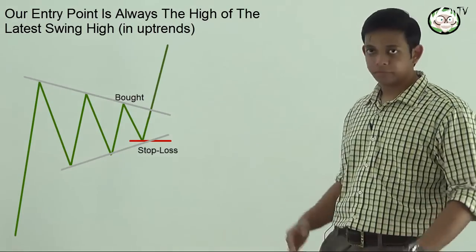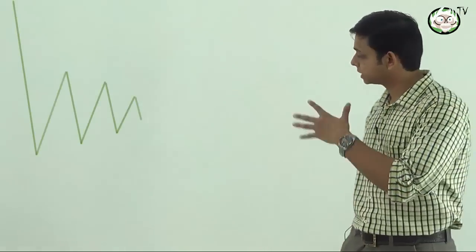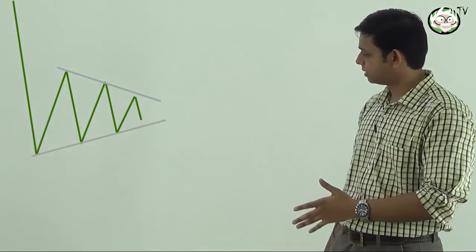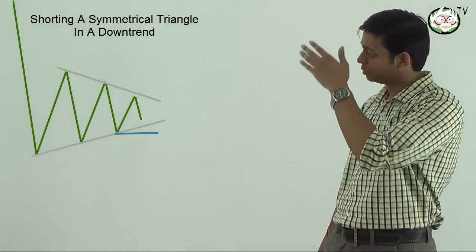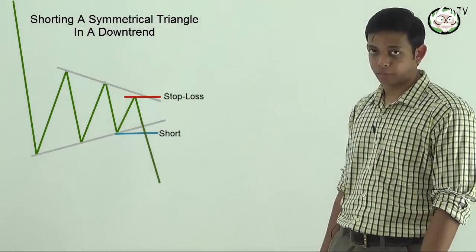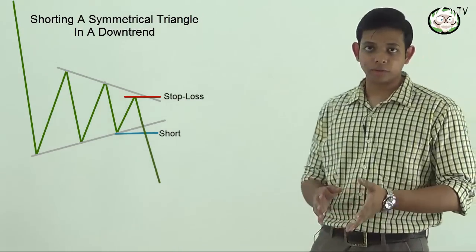What if we're in a downtrend? It's quite simple. When we're moving in a downtrend, you will see that we have a swing low. You will short that point and your latest swing high is going to be your stop.